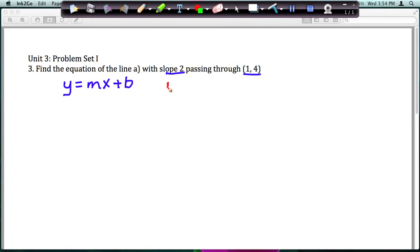So remember, m stands for your slope, and b stands for your y-intercept. And you always write that y-intercept as a point, except for when you're plugging into the equation, so that's the point (0, b).